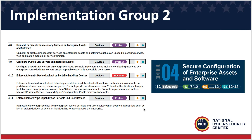In implementation group two, any unnecessary services that are on your assets should be disabled or uninstalled. There are a couple of different ways you can go about that. Anything that's unneeded can be an avenue or an attack vector for a criminal.